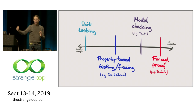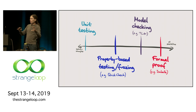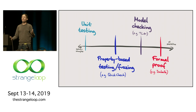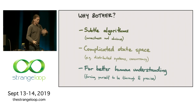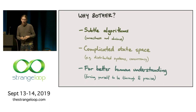Formal proof is right at the other extreme, where we actually want to guarantee that some properties hold in absolutely all possible circumstances. Even if there's an infinite state space, we still want to be able to prove that certain properties hold in every possible configuration of a system, even if they're infinitely many. Proof is kind of hard work, I must admit, so you might wonder whether it is worth the bother. I will try to motivate it very briefly.